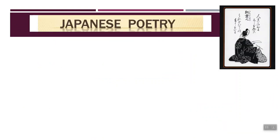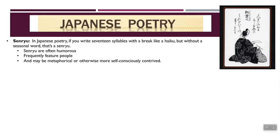There are other forms of Japanese poetry similar to haiku. One of the poems I'm giving you fits into one of these other categories. The first is a senryu — in Japanese poetry it has 17 syllables with a break like haiku, but without the seasonal word. So it's structured exactly the same but doesn't have that focus on nature. Instead, senryu often feature people, can be humorous, and sometimes contain more of a metaphor than haiku might.